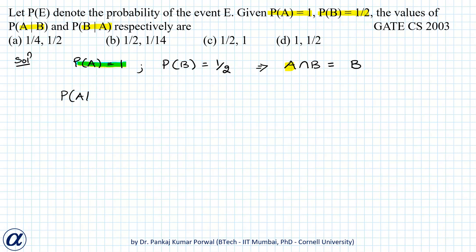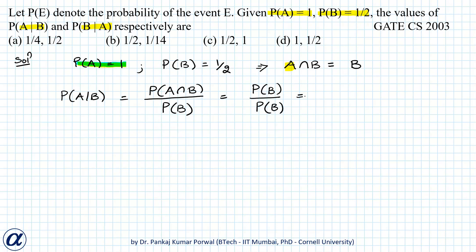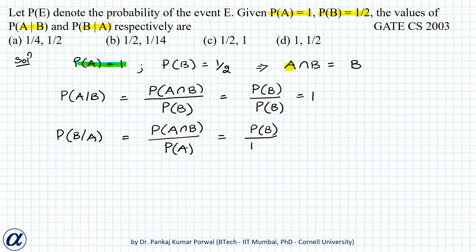So P(A|B) equals P(A∩B) divided by P(B), which equals P(B) divided by P(B), and that equals 1. And P(B|A) equals P(A∩B) divided by P(A), which equals P(B) divided by P(A), and that equals 1/2 divided by 1, which is 1/2.